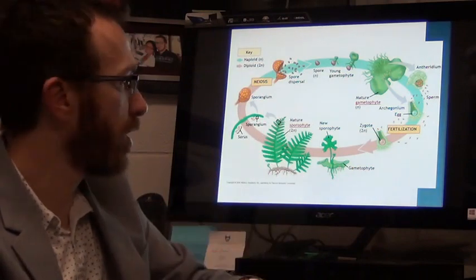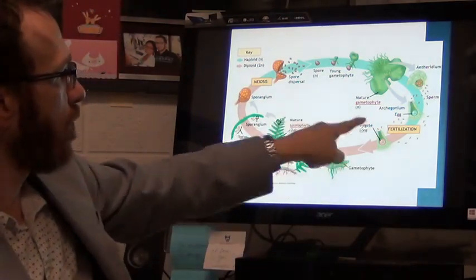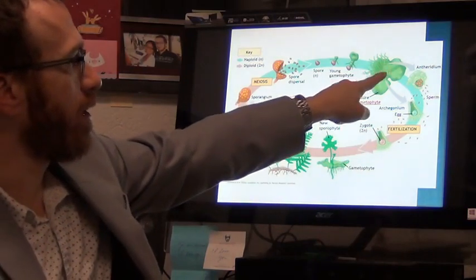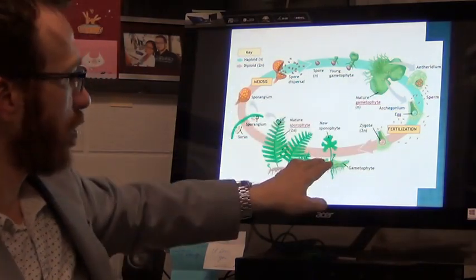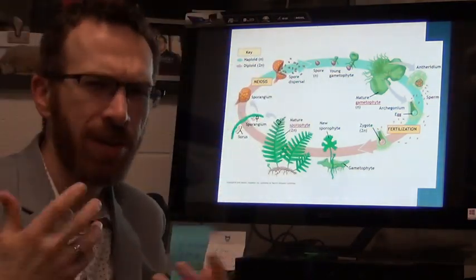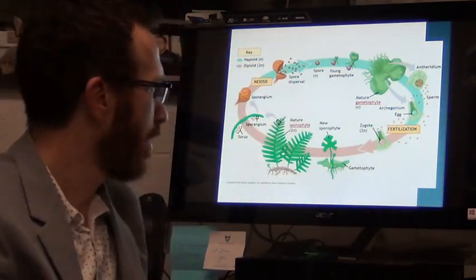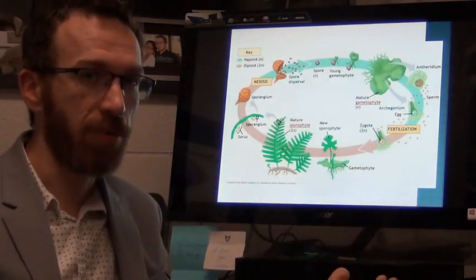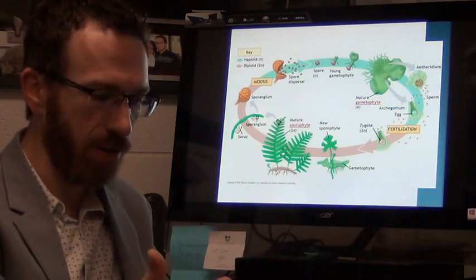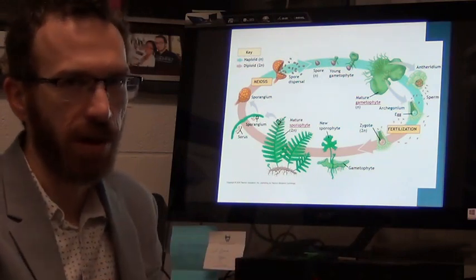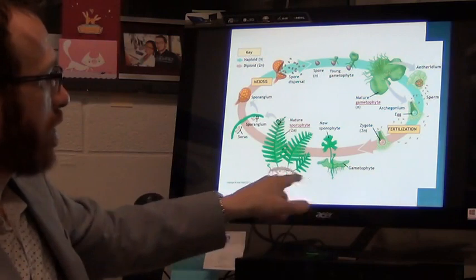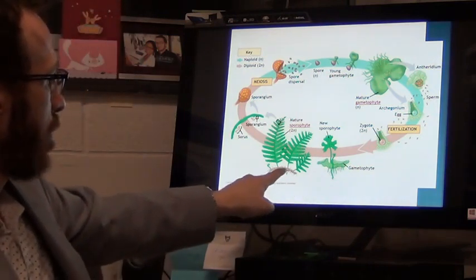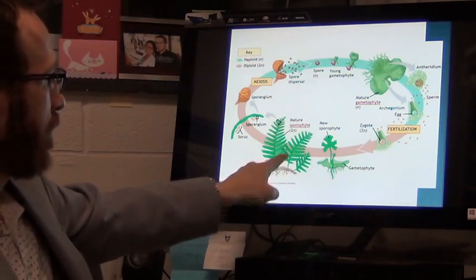Once that sperm reaches an archegonium, whether on the same prothallium or a different prothallium, it will fertilize that egg, turn into a zygote, and then the sporophyte will grow out of that archegonium on the prothallium. The sporophyte grows out of the gametophyte, just like it did in the bryophytes. That produces the fern that you think of when you think of a fern. When you think of a fern growing on the ground, that's a sporophyte growing out of a gametophyte. Notice it also shows a rhizome where you have different ferns growing out of that rhizome.